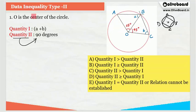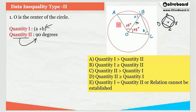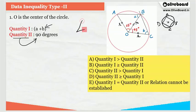In quantity 1, they are asking the value of A plus B, where A and B are indicated by specific angles. Now if you look closely at triangle AOB, this is an isosceles triangle because OB is a radius of the circle, AO is also a radius, and OC is also a radius. So triangle AOB is isosceles with two equal sides. Similarly, in triangle BOC, these two sides are also equal. The property of an isosceles triangle is that if two sides are equal, the opposite angles to those sides are also equal.